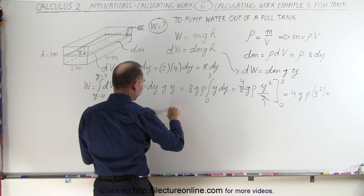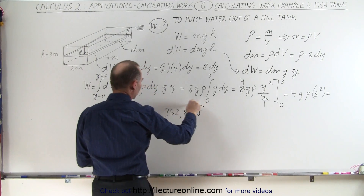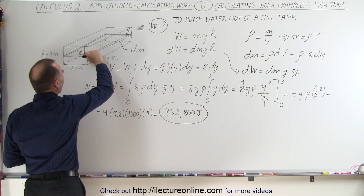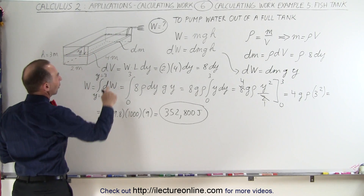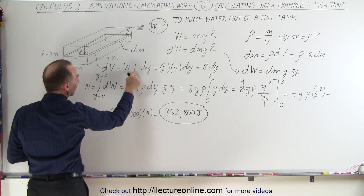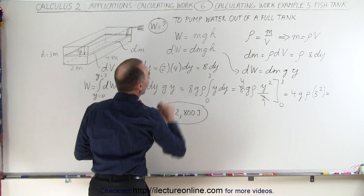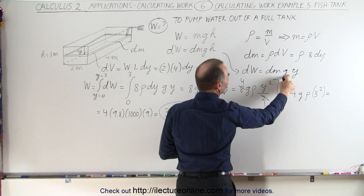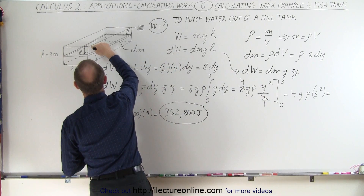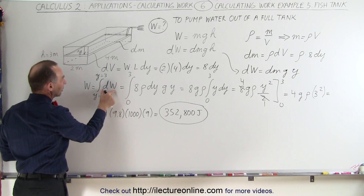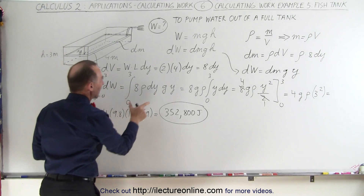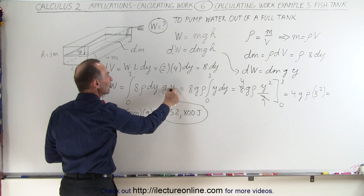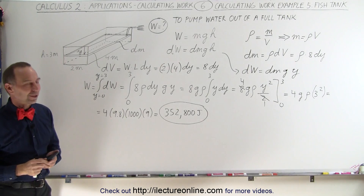And that's how we do it. To recap: we take a small thin slice of height dy. The volume of that slice is length times width times dy, which becomes 8dy. The small work dw is dm — the mass in that slice — times g times the height y from the zero point. Summing all the dws by integrating from y equals zero to three, with dm equal to 8ρdy, gives us the final result of 352,800 joules.